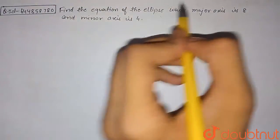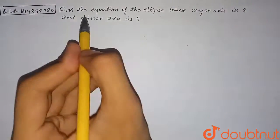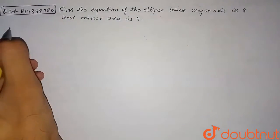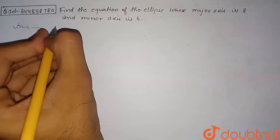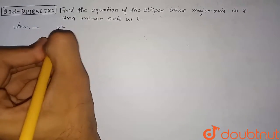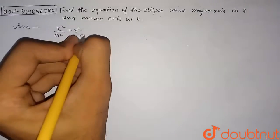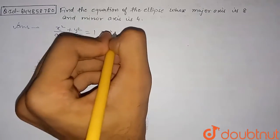Find the equation of the ellipse whose major axis is 8 and minor axis is 4. Let's begin with the solution. First, we assume our ellipse. The ellipse will be x²/a² + y²/b² = 1. This is our assumed ellipse.